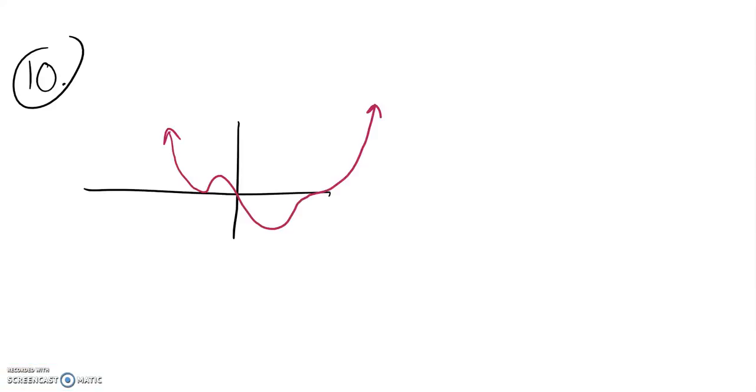This is Math 141 Practice Test Number 1, Problem Number 10. The directions say to write a potential polynomial for this, and we can leave it in factored form.